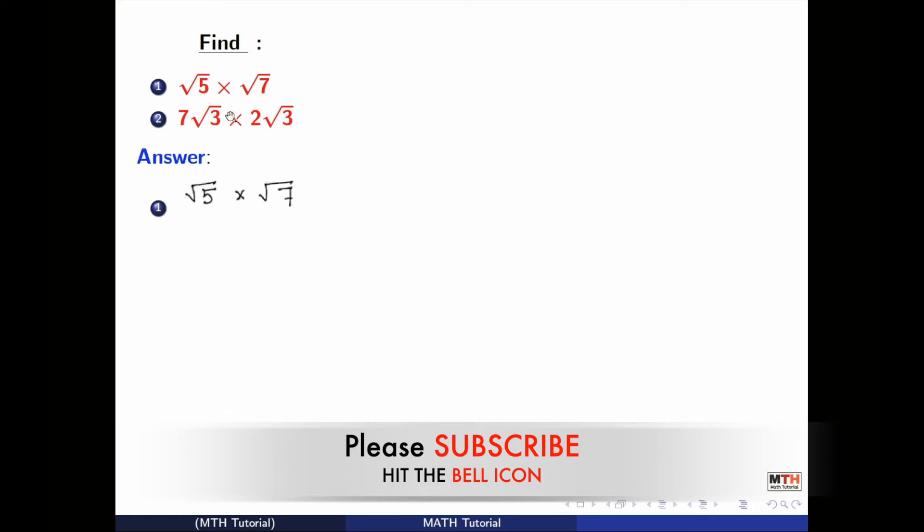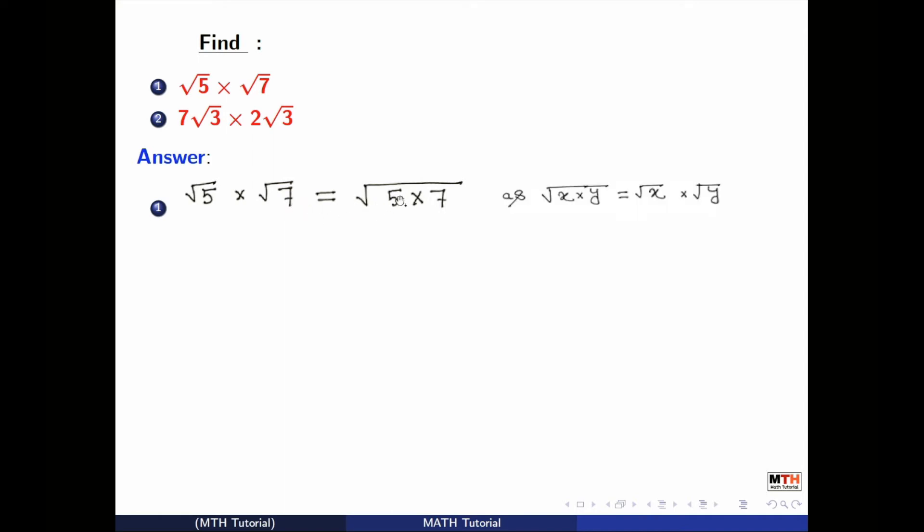We have root 5 times root 7 in our first example. So we will write it as square root of 5 times 7 at first. Here we have used a rule that is square root of x times square root of y is equal to square root of x times y.